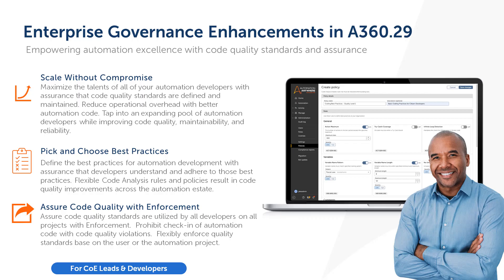Code analysis is a feature initially released in VDOT 25 and has since seen strong customer adoption. In VDOT 29, we are releasing Enforcement, a much requested feature where the lead developer can set thresholds for code quality that are enforced when the developer checks in the code. This provides assurance and governance controls that code quality standards are in place from the beginning of the automation development lifecycle.